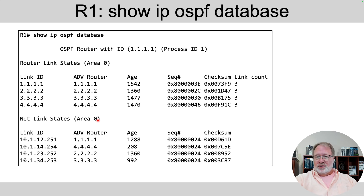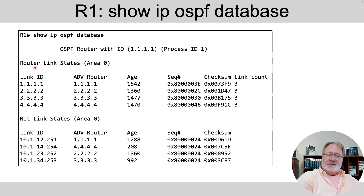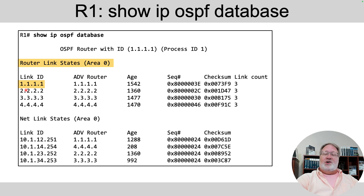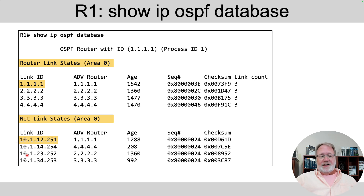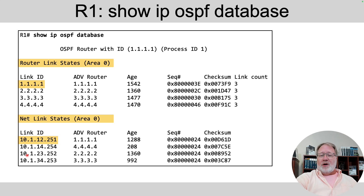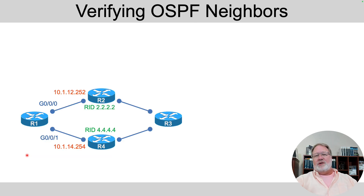Knowing that, after you learn a little more about designated routers, you'd expect to see four type 1 router LSAs — one per router. You could look at the router link states and see the link IDs, which are the router IDs. For the type 2 network link states, their link IDs are the IP address of the designated router that created the LSAs. What OSPF on router R1 would do is take this data and crunch it with the SPF process to create those routes.